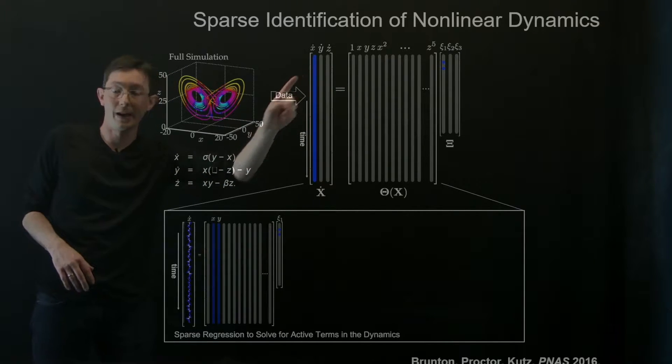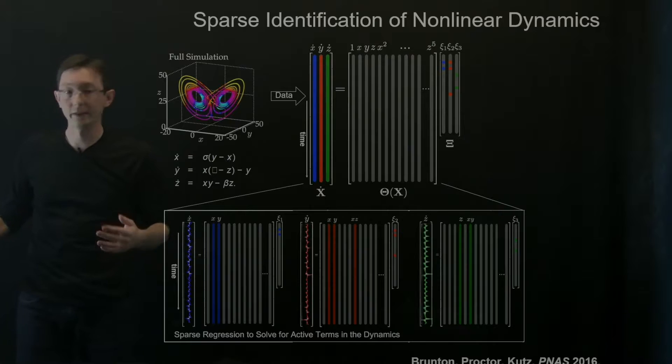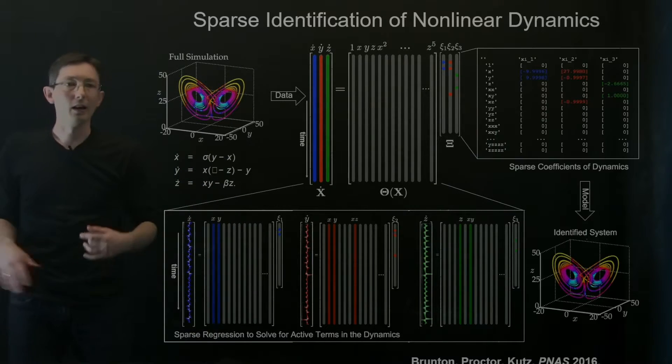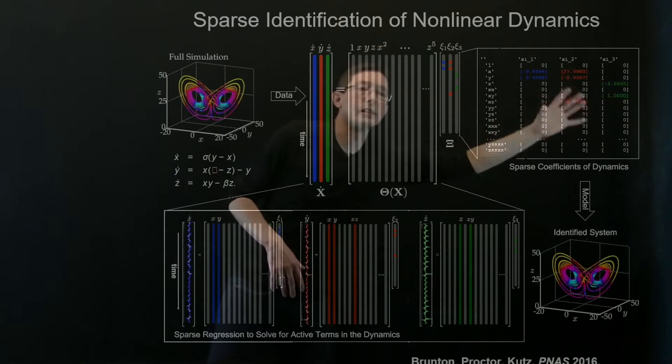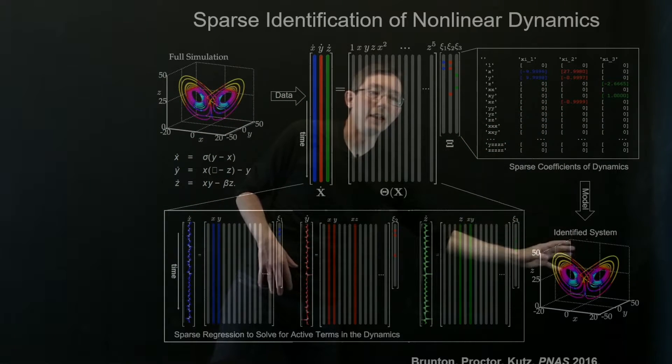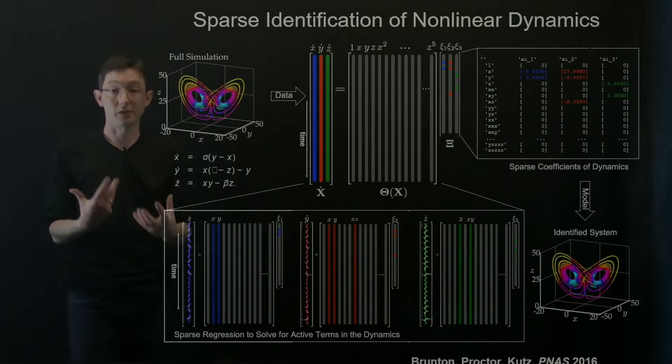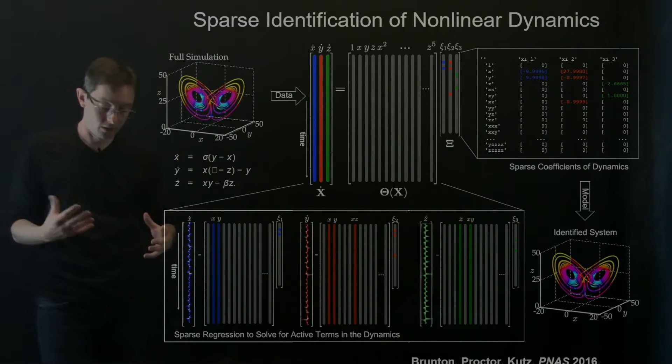The fewest columns that give you x dot, the fewest columns that give you y dot, and the fewest columns that give you z dot using sparse regression. And then what you end up recovering is a dynamical system that agrees with your original system and it identifies the correct nonlinear structure. So this is a pretty cool method of nonlinear system identification purely from data.